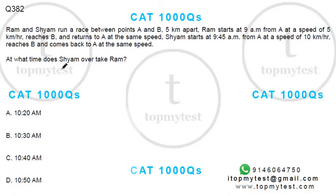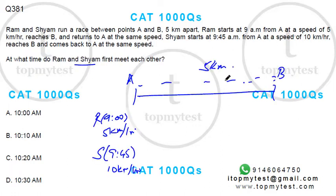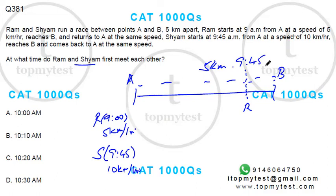From 9 to 9:45, only Ram is running. He can complete the entire distance in one hour, so at 9:45 Ram will be at B and Shyam will be starting. At 10 o'clock, Ram would have turned back and Shyam would be halfway through — since at ten kilometers per hour it takes him half an hour to reach B, so in 15 minutes he'll be halfway.